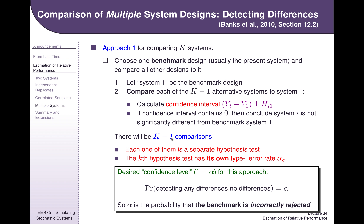That will give us k minus one comparisons, and each one of them is a separate hypothesis test with its own type one error rate. So if we think about the family where we are just trying to detect whether there is any difference among all three systems, the null hypothesis is that there's no difference, and the error would be detecting any difference. The alpha for the family is the probability of detecting any differences given that there are no differences, and that alpha is going to be built up from the alphas that go into these individual tests. We need to figure out that mapping in order for this alpha to be what we want it to be, because this is the alpha we actually care about, but these are the alphas we have control over.